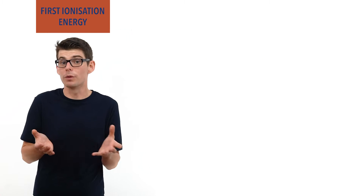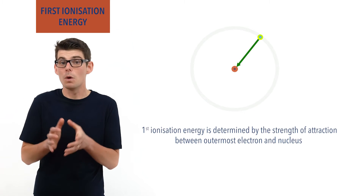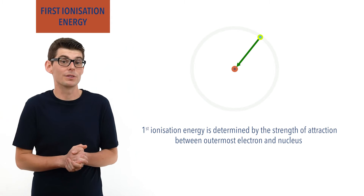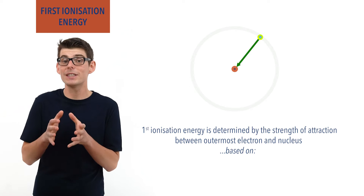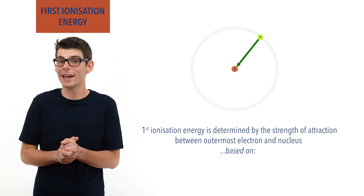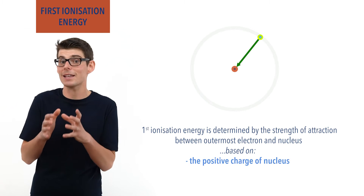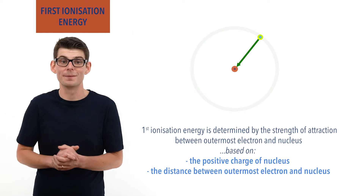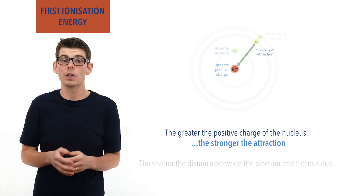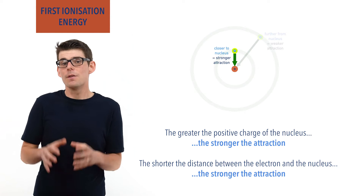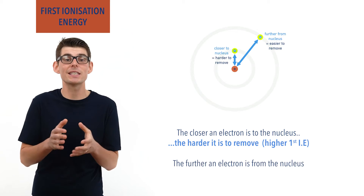The amount of energy required to remove an electron from an atom is based on the attraction between the outermost electron and the atom's nucleus — electrons being negatively charged and the nucleus positively charged due to the protons inside it. The strength of this attraction is based on two things: the size of the charges involved and the distance between them. The size of the charge of an electron is always the same (relative −1), so it is the size of the positive charge of the nucleus and the distance an electron is from the nucleus that determines the attraction strength. The greater the positive charge of the nucleus, the stronger the attraction; and the shorter the distance between the nucleus and electron, the stronger the attraction as well. The closer an electron is to the nucleus, the harder it is to pull it away; the further away, the easier.